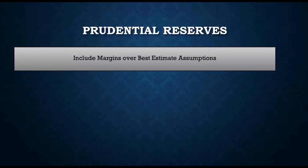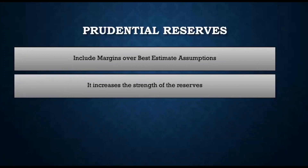These additional margins are known as prudent margins. They are added on top of best estimate assumptions, and the more margins that are added, the higher the reserve and the stronger the company — because if the future turns out to be worse, the company will have enough reserves to pay out claims. However, it does not mean that the higher the margins the better, because if the company keeps unexpectedly high reserves beyond what is required, they are locking their money and not using it to earn additional returns.